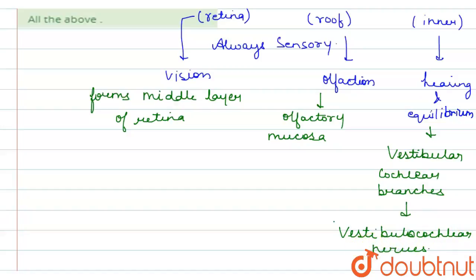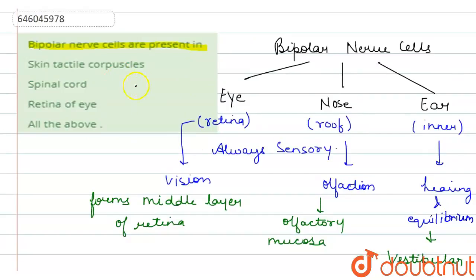So in the question it was asking that bipolar nerve cells are present in, so from the given options we can say option number three, that is retina of the eye, is the correct answer because it is present in eye and is present in the retina of the eye and it forms the middle layer of the retina. So our option number three becomes the correct answer. I hope I have solved the question, thank you.